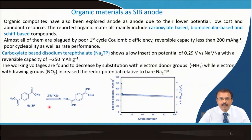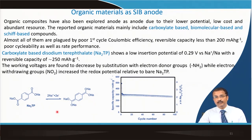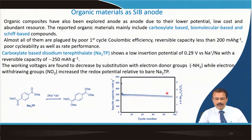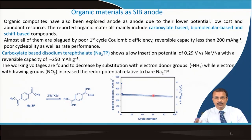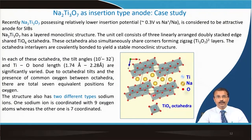The working voltage can be decreased by substitution with electron-donor groups like amine, while electron-withdrawing groups like nitro oxide increase the redox potential. This provides the ability to manipulate composition and tune the insertion voltage according to need, with around 300 mAh/g capacity achievable, though high coulombic loss in the first cycle remains a concern, likely due to SEI layer formation.